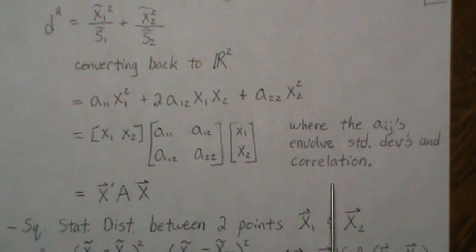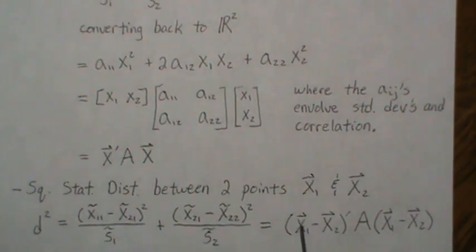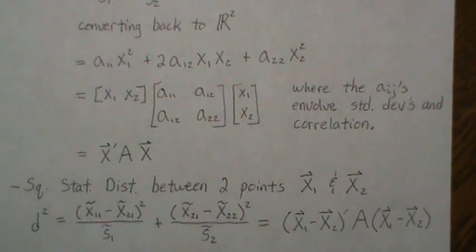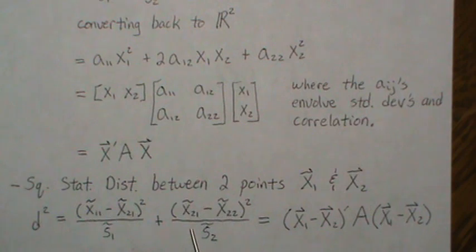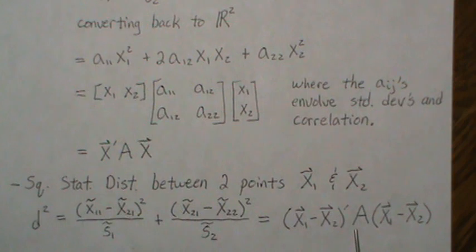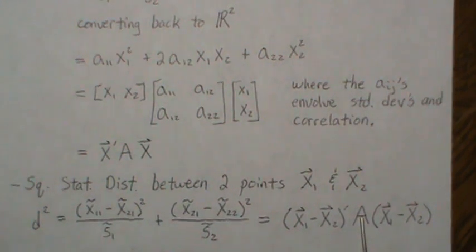So now if we wanted to find the squared statistical distance between two points, it's the same way. So we rotate the axis to eliminate the correlation. We calculate the standard statistical distance formula. And then we take this and convert it back into the XY. We get something like this, where this is another quadratic form. Now the A, of course, there's information in that about the variances of each of the variables and the correlation of each of the variables.